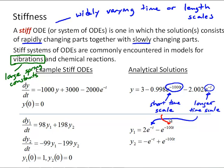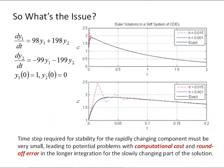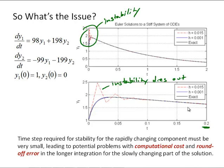So let's look at why this can pose problems for a numerical solution. So what's the issue? Here are some example Euler solutions to the same stiff system of differential equations. I'm showing the exact solution with time steps of h equals 0.015 and h equals 0.001. And what you see here is even with a relatively small time step of 0.015, we see some instability in the solution.